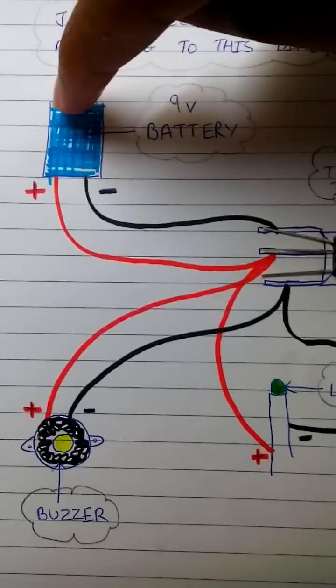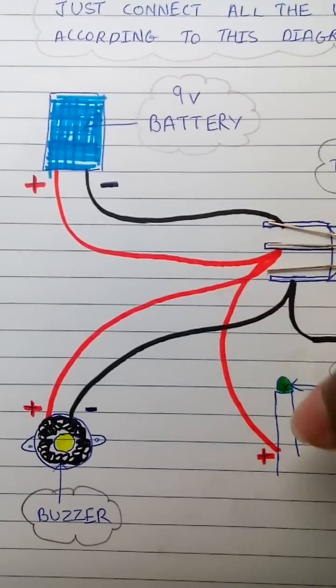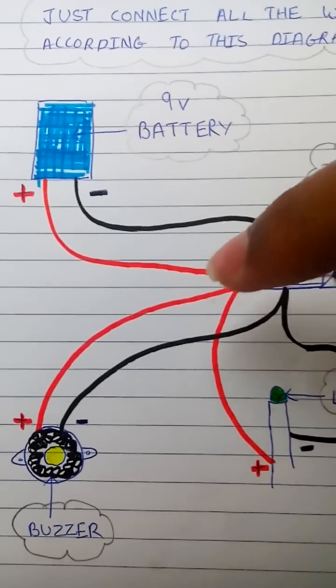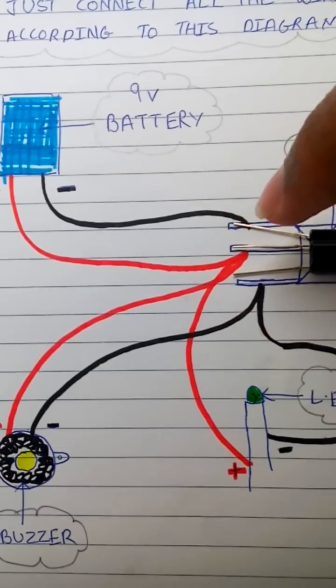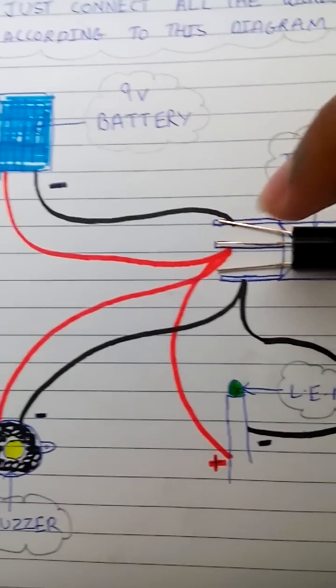Now this part is very simple. The positive part of the battery, the positive part of the buzzer and the positive part of the LED, all together once you join, you have to connect them to the center, the center pin of this TSOP1738 IR resistor.